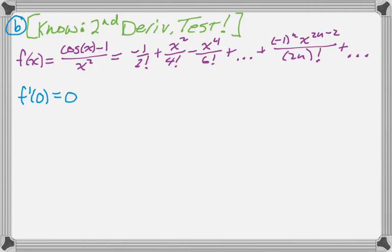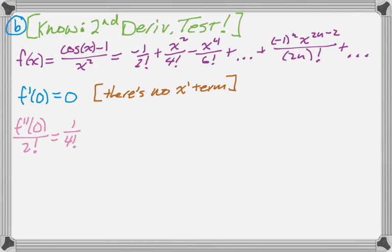So I know that by looking at the series f prime of 0 is 0, how do I know that? Well, there is no x to the first term, and therefore the coefficient must have been 0, disappeared. I know, because I know Taylor's series, that the coefficient of x squared is the second derivative at 0 divided by 2 factorial.